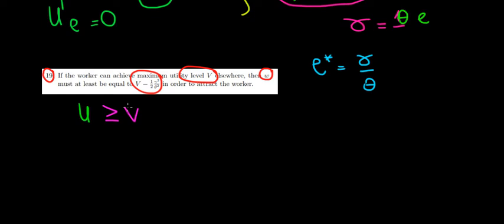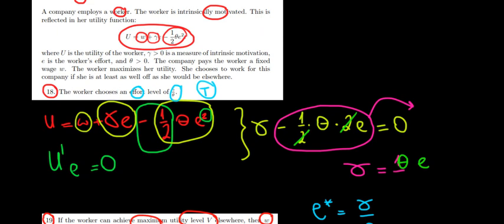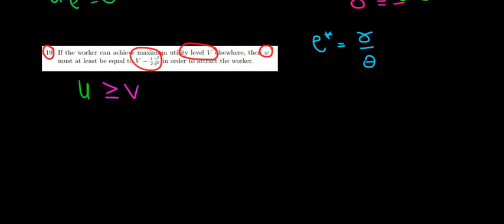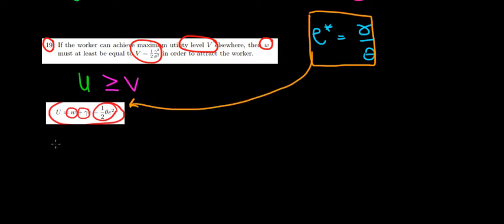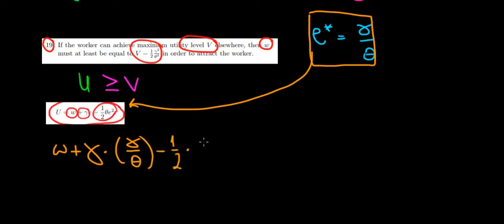We know the utility function in this company — let's crop it and paste it here. We have the utility function, and we also know the effort level we calculated in the previous question, visible in our picture. This was the optimal effort level. So we're going to substitute this effort level into the utility function. The utility function is going to look like W plus gamma times (gamma divided by theta), minus one half times theta times the effort squared, which is (gamma over theta) squared, and this must be greater than or equal to V.